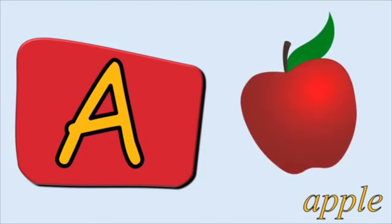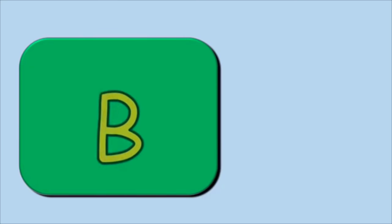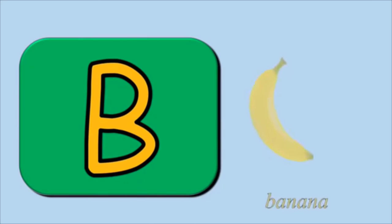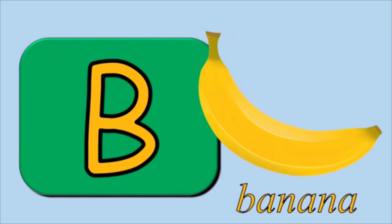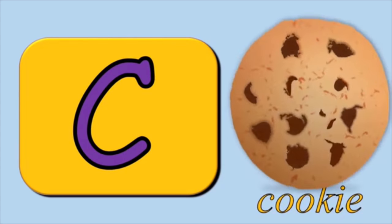A is for apple. Eh, eh, eh. B is for banana. B, b, b. C is for cookie. K, k, k.